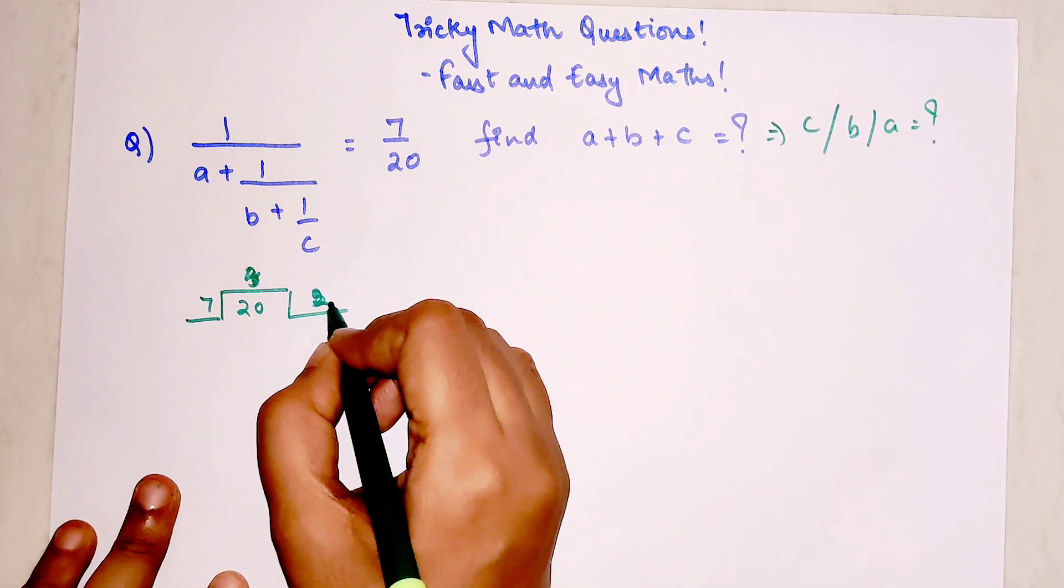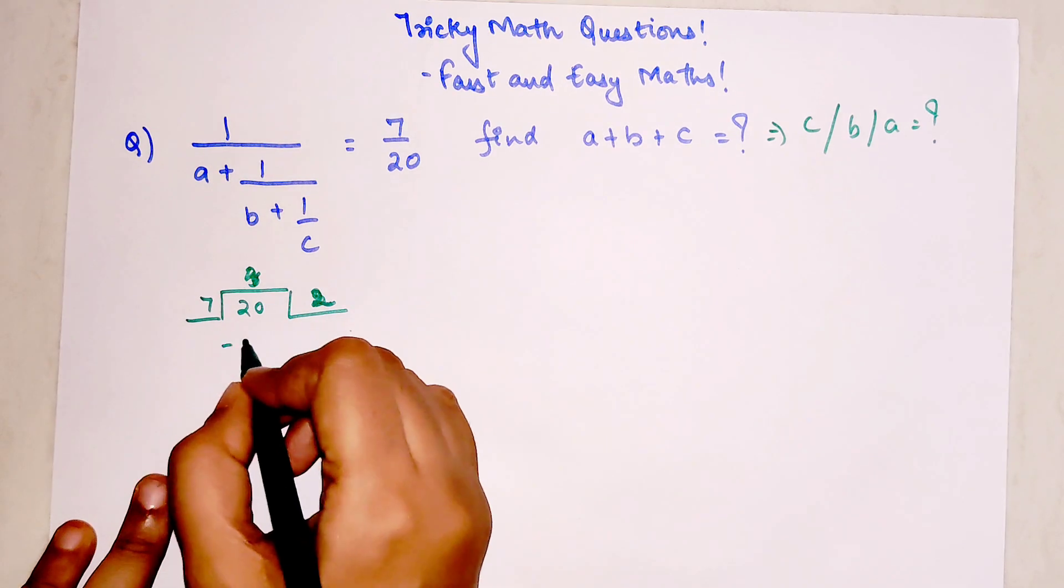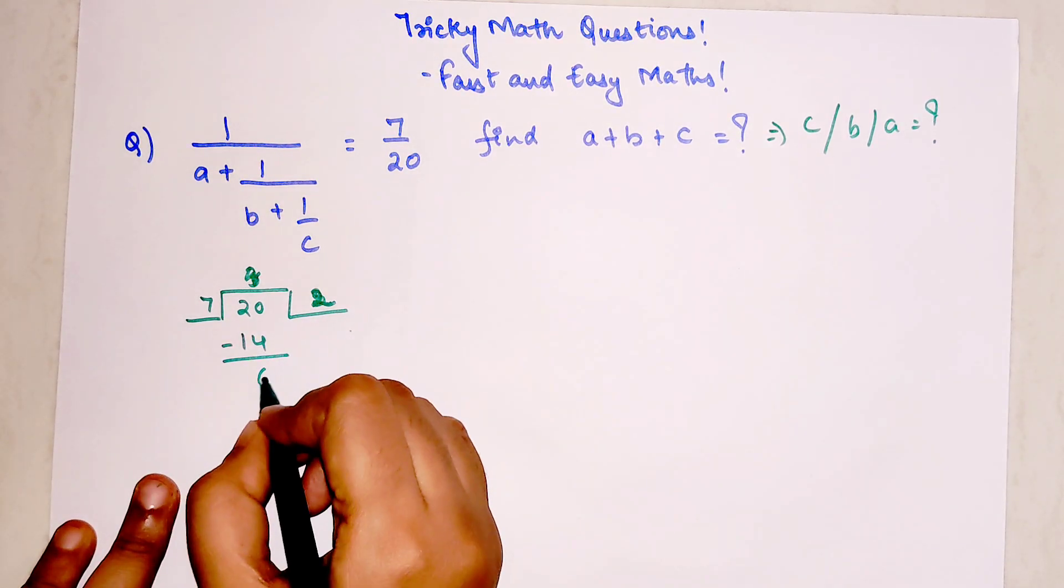So 2's are, my bad, this is 2's are, so you are getting 14. You are left with 6.